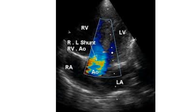Apical 5-chamber view in Tetralogy of Fallot with colour flow mapping in systole showing right-to-left shunt across the ventricular septal defect. A blue stream moving from the right ventricle across the VSD to the aorta is clearly visualized in this frame. There is also a blue stream from the left ventricle to the aorta.